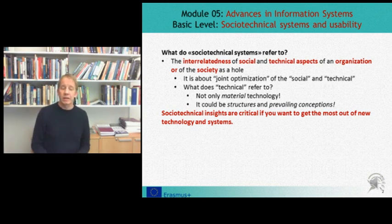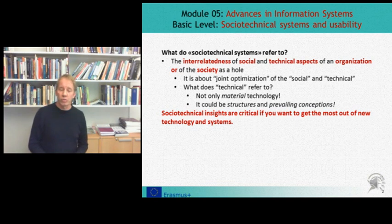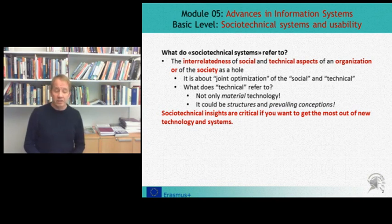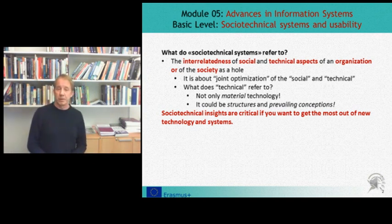It is said that the social technical approach to an organisation is about joint optimisation. How may adjustments in the social relationships help to utilise the technical systems? And how may technical adjustments enhance the performance and well-being of a group? These are questions which not only advise us in recruitment and in human resource management, but also in the well-functioning of any system we want to implement.